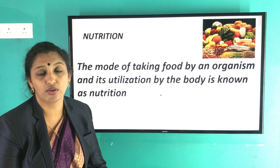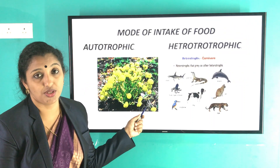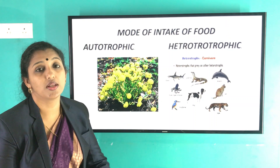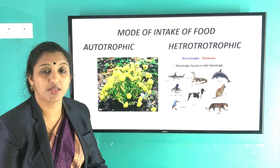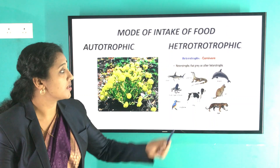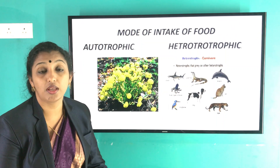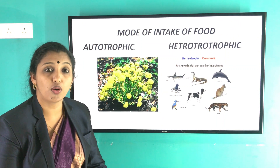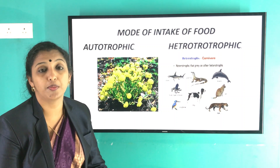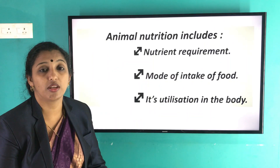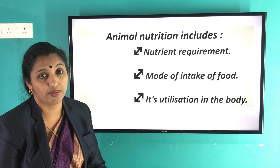In autotrophic mode of nutrition, the organism prepares food by itself from simple substances. In heterotrophic mode of nutrition, the organisms take in ready-made food prepared by plants. All animals perform heterotrophic mode of nutrition.